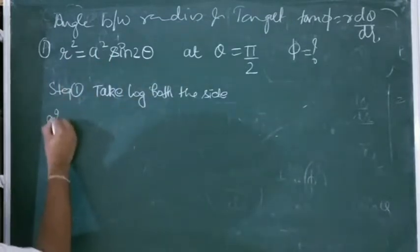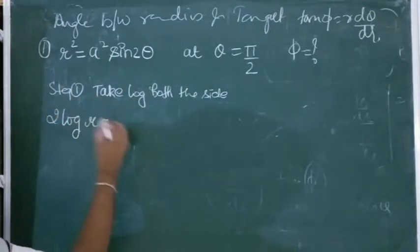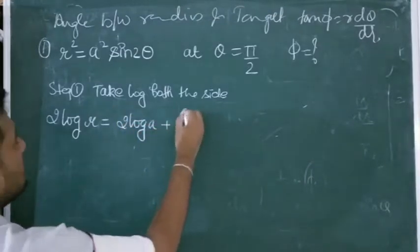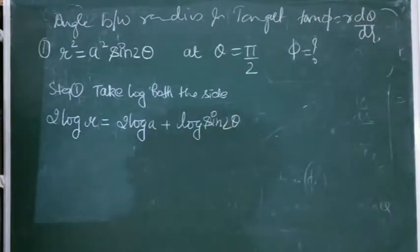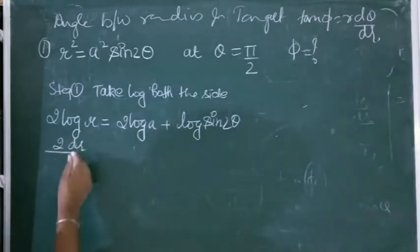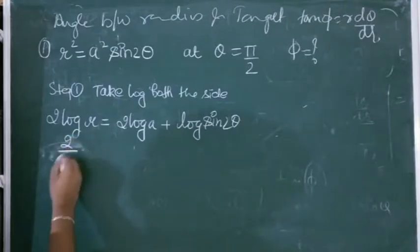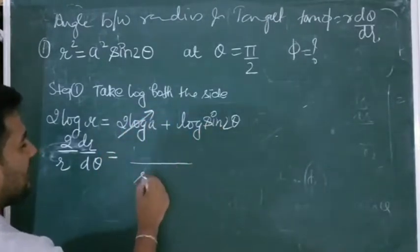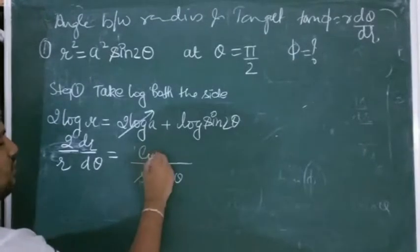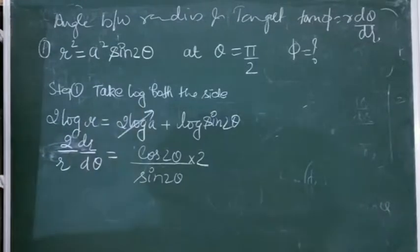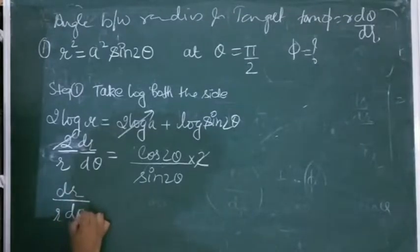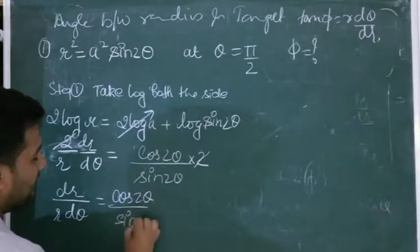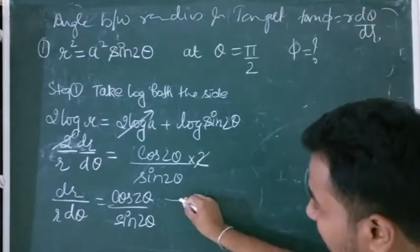Taking log of both sides of r² = a²·sin(2θ), I get: 2·log(r) = 2·log(a) + log(sin(2θ)). Now differentiating: 2·(1/r)·dr/dθ = 0 + (cos(2θ)/sin(2θ))·2. The 2's cancel, so I get (1/r)·dr/dθ = cos(2θ)/sin(2θ).